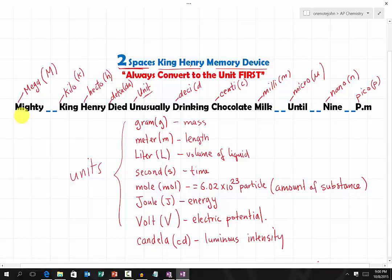It starts with: 'Mighty [space space] King Henry died unusually drinking chocolate milk [space space] until [space space] nine [space space] p.m.' Notice the two spaces appear at specific points throughout the phrase. You have to memorize this statement first.